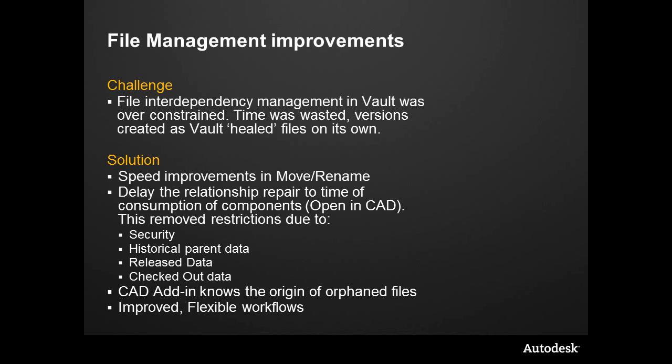Vault has always understood that with an Inventor file or an AutoCAD file there are relationships, and oftentimes that file interdependency — if you want to move, rename, or restructure files — Vault was there to go in and fix everything for you. It would take it all out to a location, fix it up, and check it back in. What we found is that was oftentimes over-constrained, and if files were released or not accessible, this would be a non-operation. Significant changes have been made inside Vault 2012 to speed up the improvements in the move file and rename file specifically.